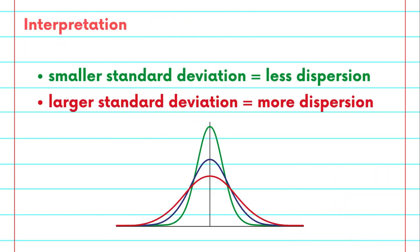If the data points in our sample were closer to the mean and less dispersed, our standard deviation would have been smaller. If they were further from the mean and more dispersed, our standard deviation would have been larger.